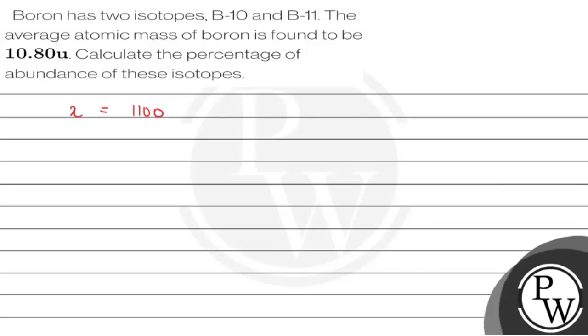This gives x equals 1100 minus 1080. This value comes out to be 20. So x is equal to 20 percent.